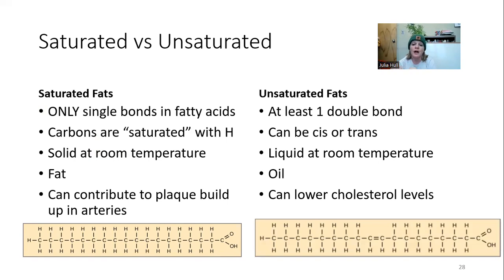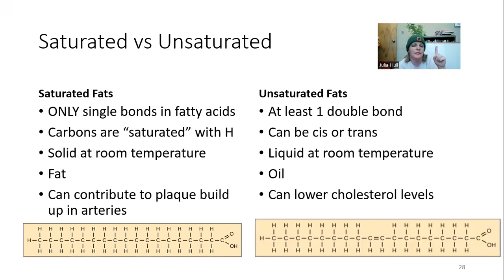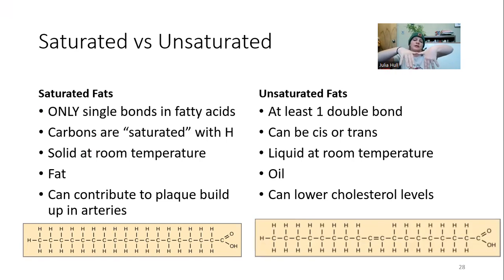We can contrast this with unsaturated fats, which means there's at least one double bond. We could break one of those bonds and add two more hydrogen atoms. If there's only one double bond, we call that a monounsaturated fat. If there are multiple double bonds, we call that a polyunsaturated fat. These arrangements can either be in the cis formation or in the trans formation. Usually these are liquid at room temperature, and we commonly call these oils. They can also help us lower cholesterol levels.